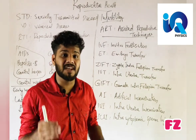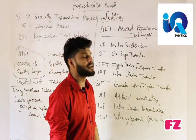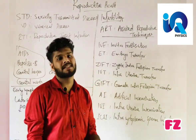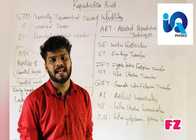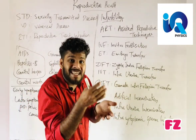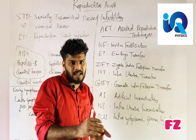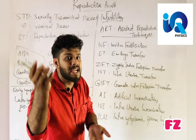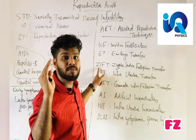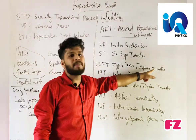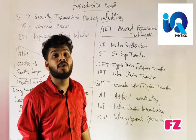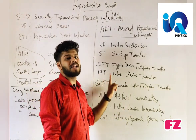IVF — In Vitro Fertilization — means fertilization outside the body, unlike normal in vivo fertilization inside the body. After fertilization, the zygote or embryo is transferred. Embryo transfer up to eight blastomeres goes into the fallopian tube — called ZIFT, Zygote Intra Fallopian Transfer. More than eight blastomeres are transferred into the uterus — called IUT, Intra Uterine Transfer.